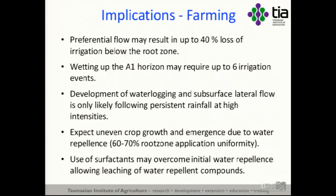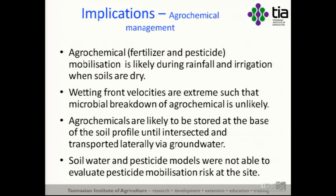In conclusion — implications for farming. Preferential flow may result in 40% loss of irrigation below the root zone. Wetting up the A1 horizon required up to six irrigation events. Development of waterlogging and subsurface lateral flow is only likely following persistent rainfall at high intensities — it's not a common feature of these soils. You can expect uneven crop growth due to low application uniformity. There's potential for surfactants to help overcome water repellency, because we know we can leach water repellents from the soil and then manage it as a normal soil.